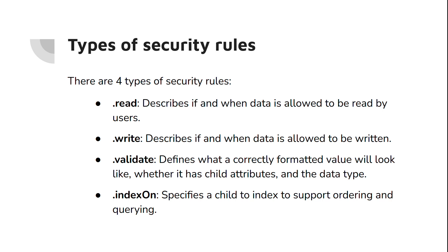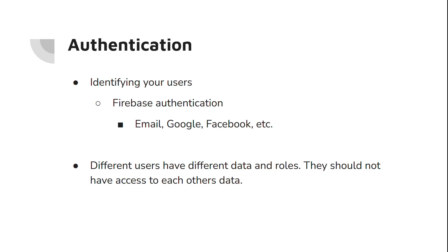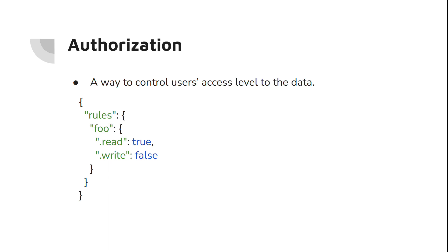You can use security rules to authenticate users, which means identifying your users based on the authentication section in Firebase — for example, if users logged in using email and password, or they used their Google or Facebook account to log in. Different users have different data and roles; some users have higher roles in your application, so they should not have access to each other's data. You can enforce these rules based on authentication, and we also have authorization — a way to control users' access level.